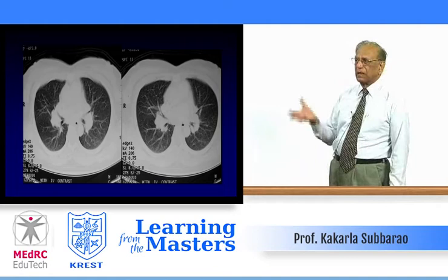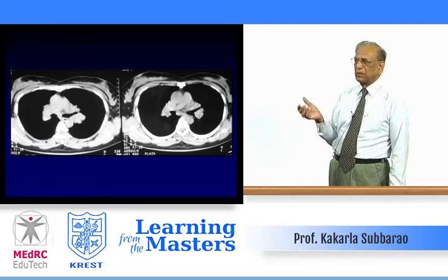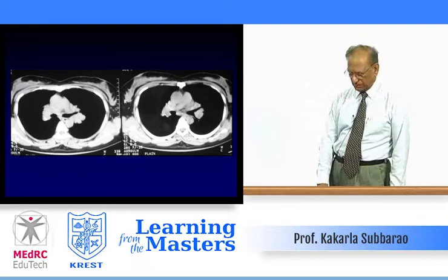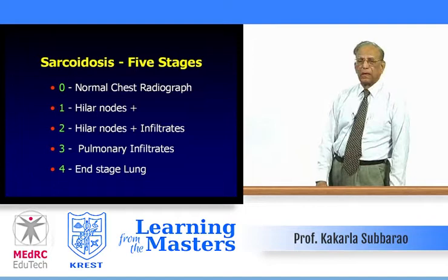Going to CT, the hilar nodes are enlarged with few interstitial changes in the lower zones. Another section shows the enlarged hilar nodes. Also note the calcific density in the right hilar nodes — well seen in the close-up view showing multiple calcific densities in the right hilar nodes. Diagnosis is sarcoidosis.